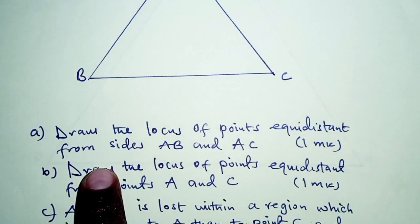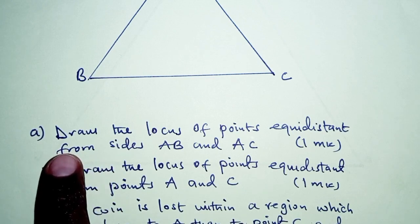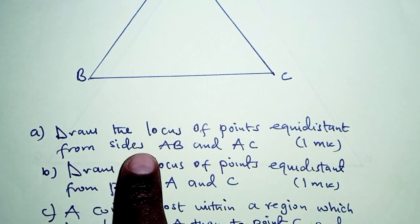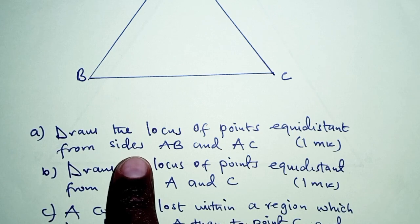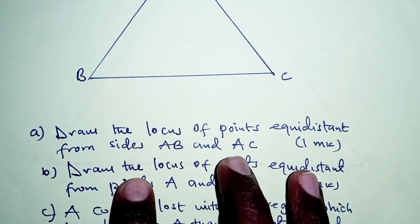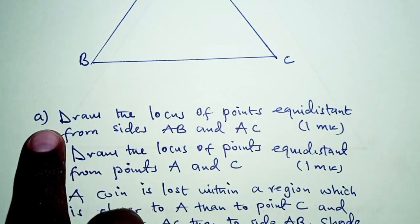Before we answer these questions, the task here is to determine whether a question is about perpendicular bisector locus or angle bisector locus. That is what we need to pay attention to. So let's look at part A.